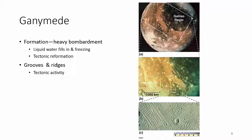Ganymede may have been hit quite a number of times, creating many craters. However, because there's liquid water underneath, the water just filled the craters in and then froze. They also think there might be some tectonic activity — instead of plates of rock like on Earth, Ganymede may have plates of ice that move around similarly.